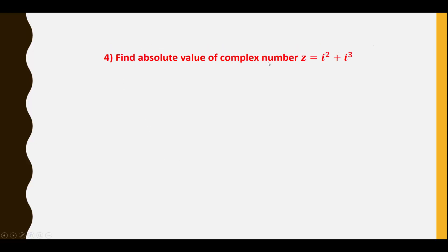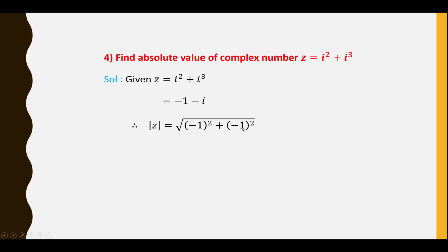Fourth question: Find the absolute value of the complex number Z = i² + i³. Since i² = −1 and i³ = −i, we have Z = −1 − i. So |Z| = √((−1)² + (−1)²) = √(1 + 1) = √2. Therefore mod Z = √2.